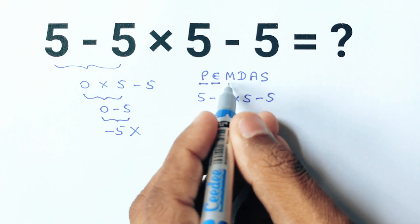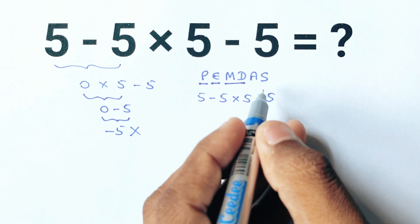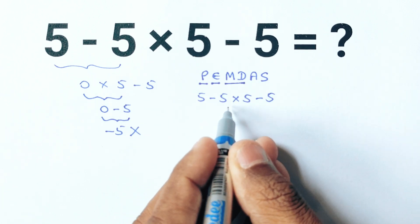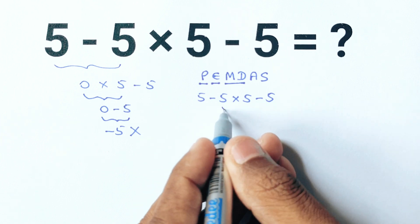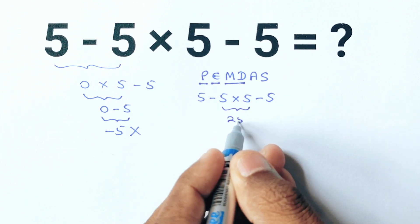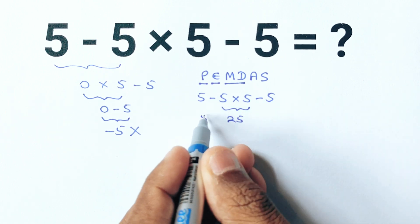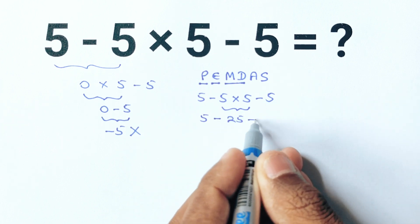Then we handle multiplication and division from left to right. Here we have 5 times 5 which equals 25. Now the expression becomes 5 minus 25 minus 5.